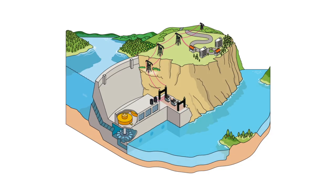Water released from the reservoir flows through a turbine spinning it, which in turn activates a generator to produce electricity.